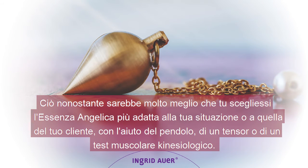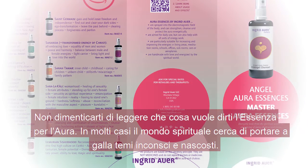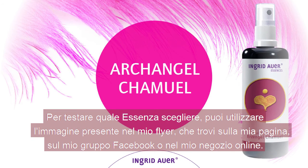However, it would be better to find out the most suitable aura essence for your situation or your clients with the help of a pendulum, a dowser or the kinesiologic muscle test. In doing so, do not forget to read what the aura essence wants to tell you. In many cases the spiritual world tries to hint at blind spots or unconscious topics. For testing, you can use the picture in my aura essence flyer, on my Facebook site, in my Facebook group or in my webshop.